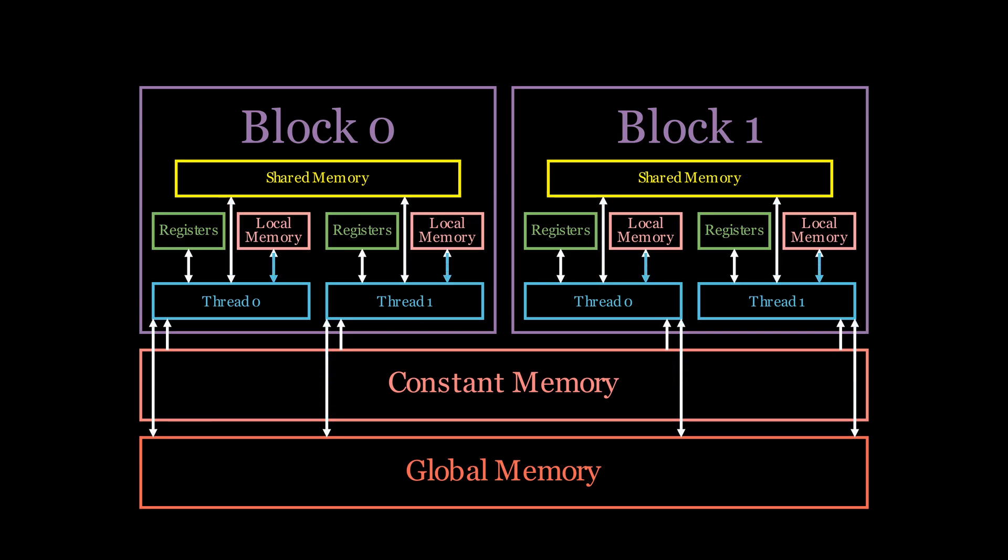To recap what we have learned in the previous episodes, constant memory is a read-only memory region that lives in DRAM. It's also very limited as we can only allocate 64 kilobytes for it.